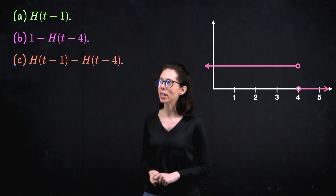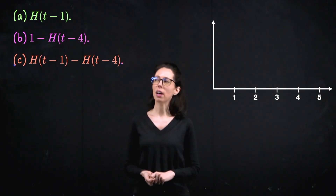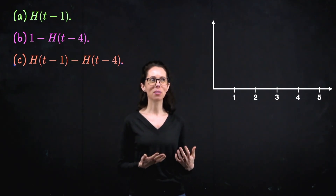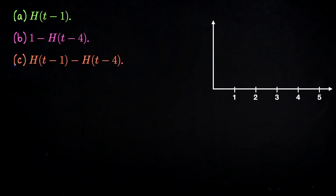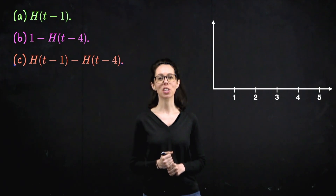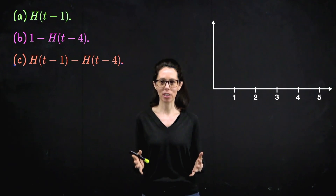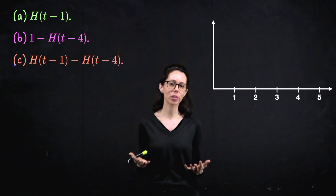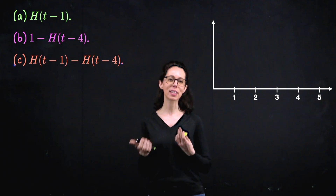Okay, let's put the two Heaviside functions from a and b together. Take a moment to work out what the graph of h of t minus one minus h of t minus four would look like, and try to interpret what this would be physically. Looking at this expression, some kind of transition is happening both at time equals one and time equals four. That breaks our time domain up into three regimes: to the left of one, between one and four, and to the right of four.